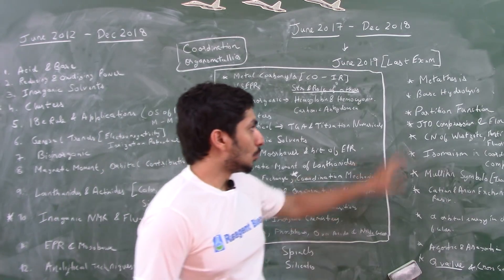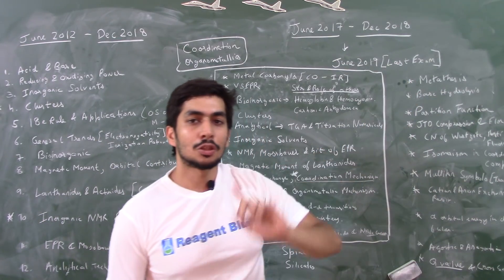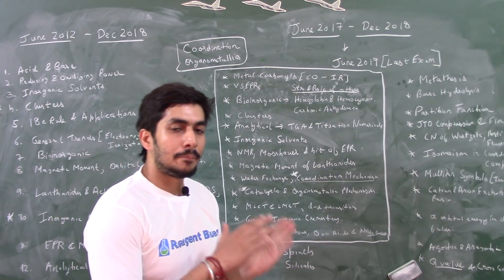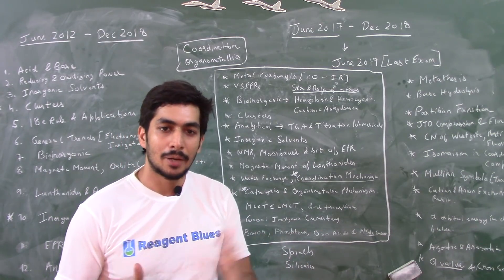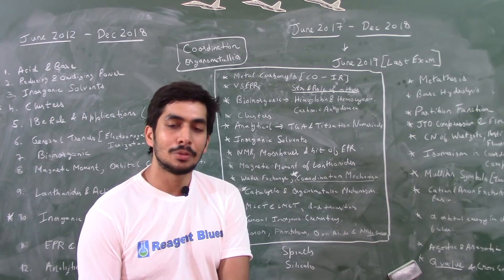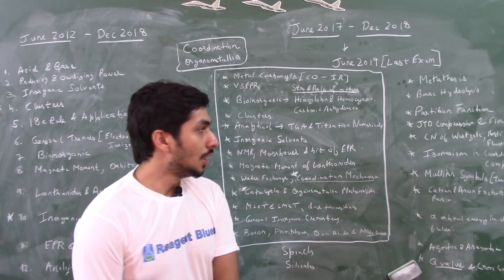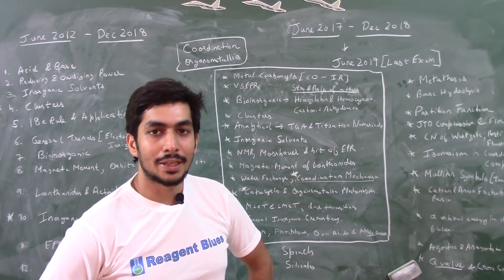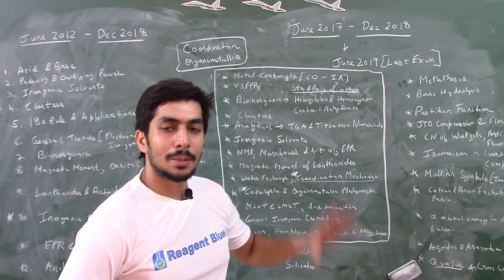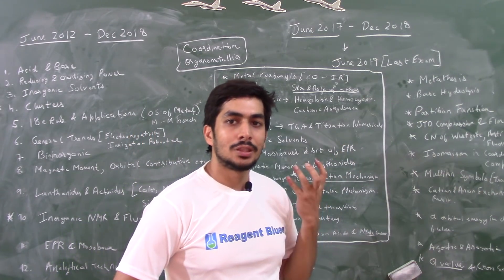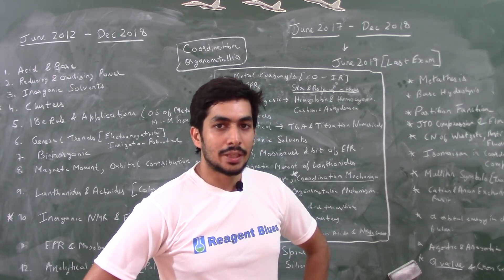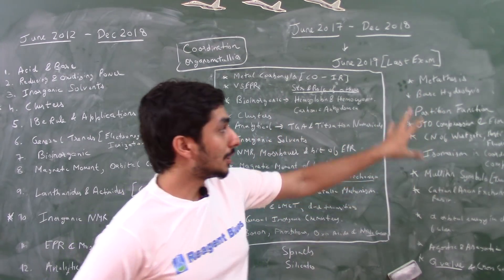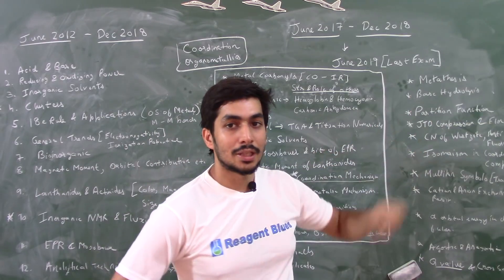First is metathesis. There was a question in June 2018, and before that there had been essentially no question on metathesis. Metathesis is a topic that has been in the dark for a long time, and I expect there might be a full 4-marker from metathesis in June 2019, because it is an important topic that has not been asked much.